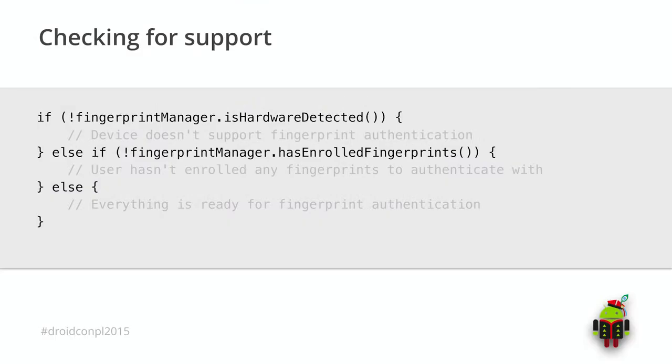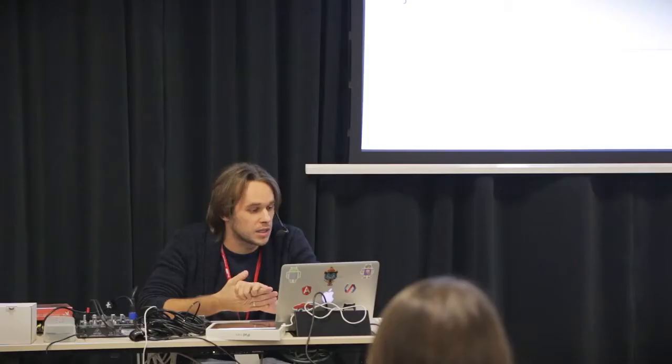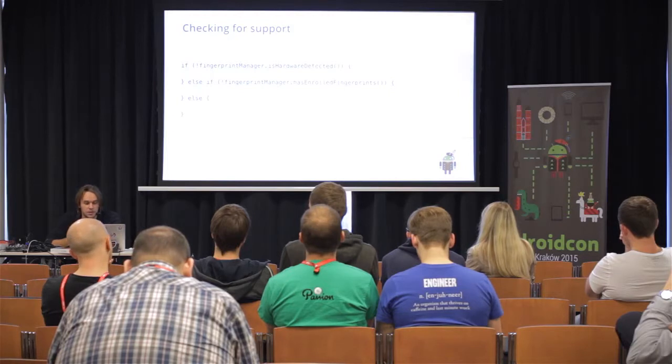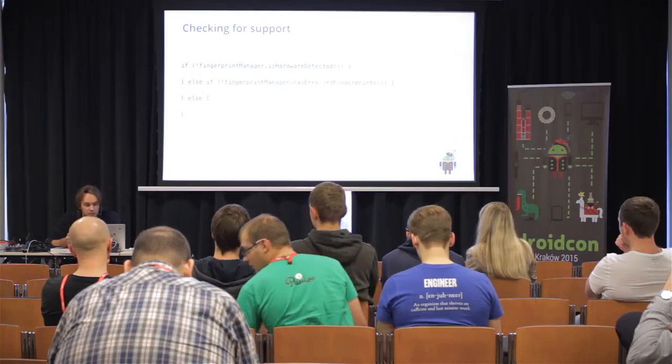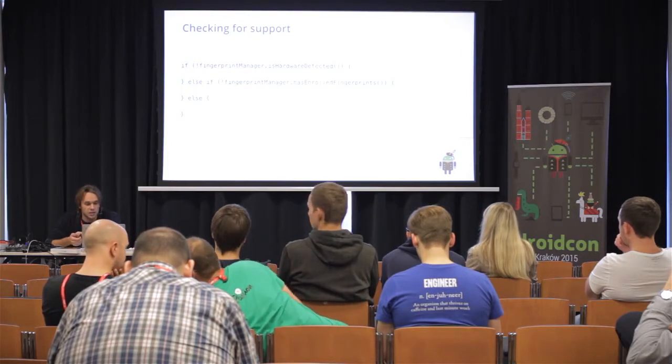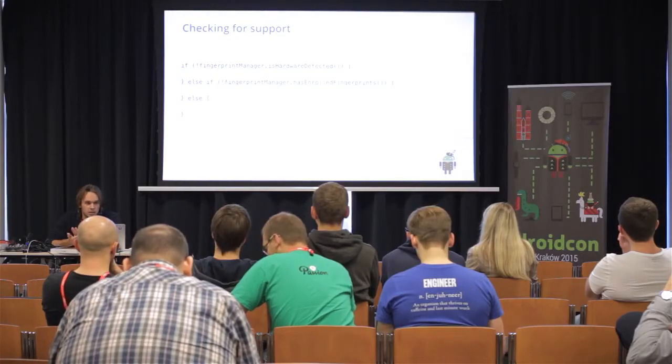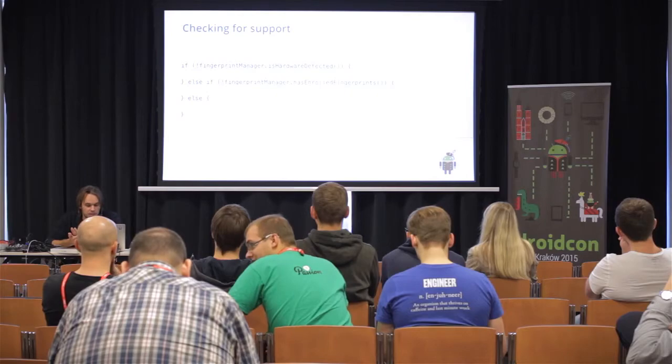To do so, we have two helpful methods. The first one is isHardwareDetected — if your device has a sensor, it will return true. The second one is to check whether the user has enrolled fingerprints. By enrolling a fingerprint, I mean that the user should go to the settings on their phone and register them in the system.